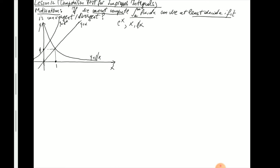We look at these three graphs and restrict ourselves to the domain x > 1, looking from one to infinity. It should be obvious from the graphs and from what we've learned in calculus that for x > 1, these three functions satisfy this relationship: e^x is the biggest, and all of them are positive for x > 1. So e^x > x > 1/x on this domain.